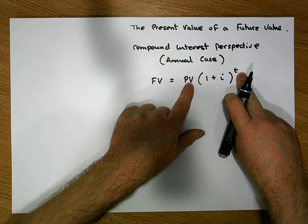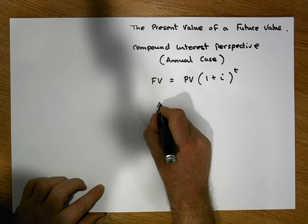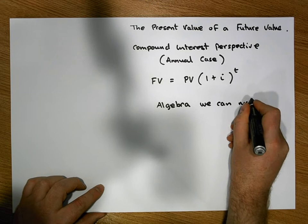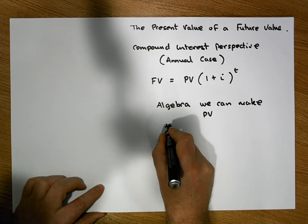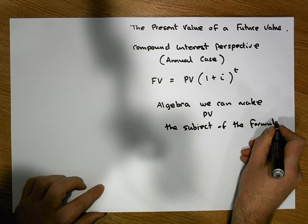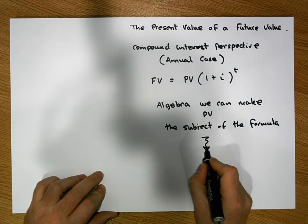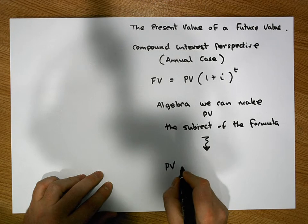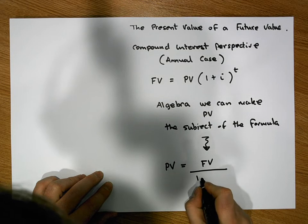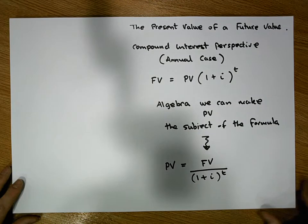So from this formula we can always calculate the future value once we know the principal value, the interest rate, and how many years our principal value is being compounded. With a little algebraic manipulation, we can make PV the subject of the formula — simply by dividing across by (1 + i) raised to the power of t — giving us that the present value equals the future value divided by (1 + i)^t.